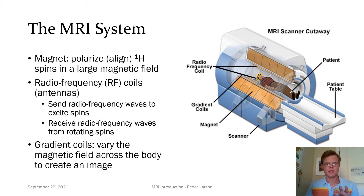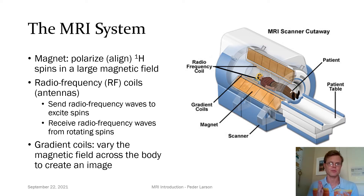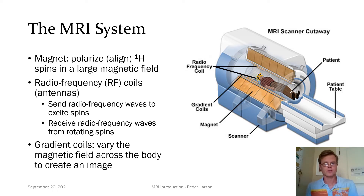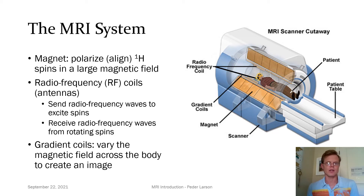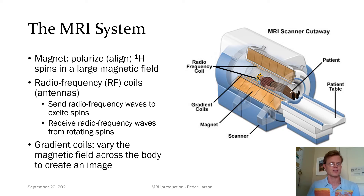To summarize, I want to show what is inside of an MRI system. The majority of the real estate inside an MRI scanner is devoted to the magnet, whose purpose is to polarize or align our hydrogen spins in a large magnetic field. Then we have sets of radio frequency coils, which are antennas, and their purpose is twofold: one is to send in the radio frequency waves to excite our spins, and the other is to receive the radio frequency waves that come back from these rotating spins. And finally, we have our gradient coils, whose purpose is for imaging — they vary the magnetic field across the body, creating different frequencies that we can separate from our MRI signal to create an image.